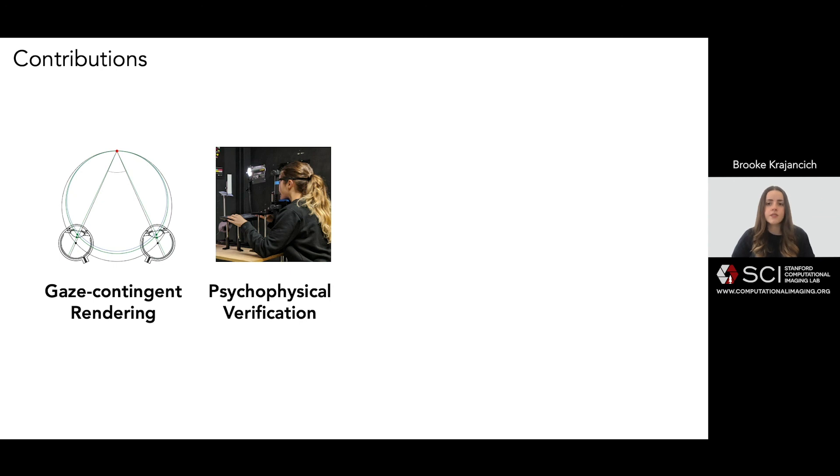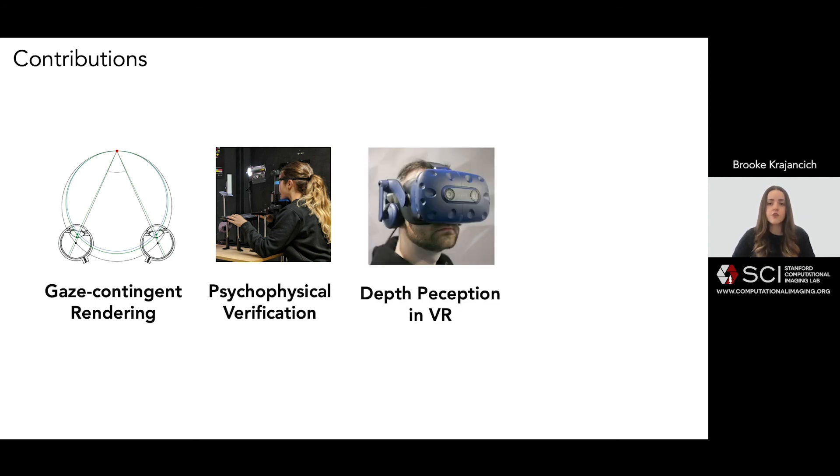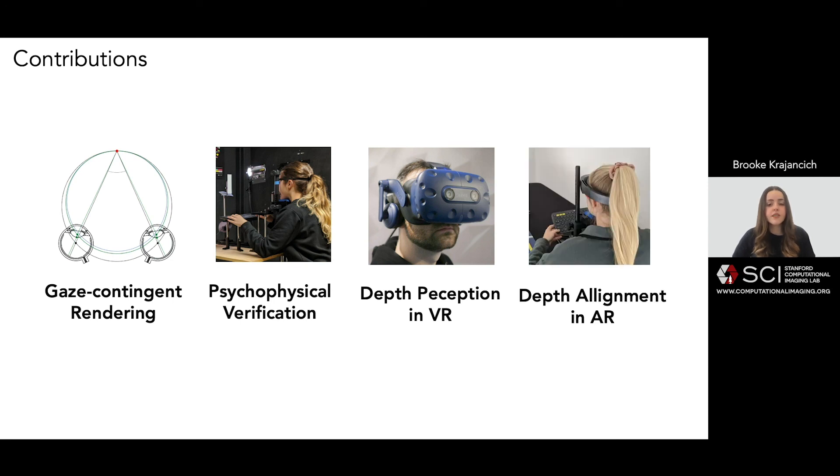And finally, I will describe two user experiments we conducted to show that making stereo rendering gaze contingent does in fact improve absolute depth perception in AR and VR. The first shows an improvement in shape perception in VR, and the second an improvement in the alignment of real and virtual objects in AR.